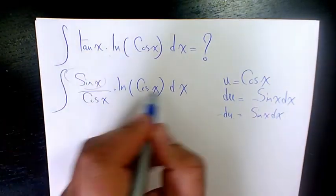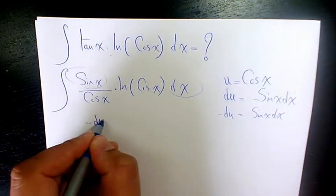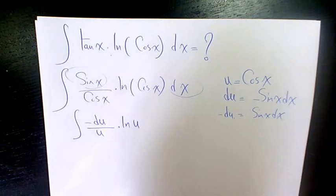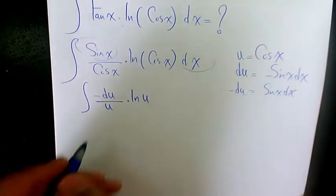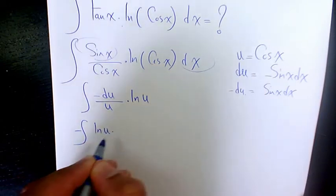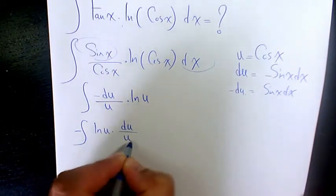So sine x and dx is going to be negative du over u times ln u. When you take the negative out, we have ln u du over u.